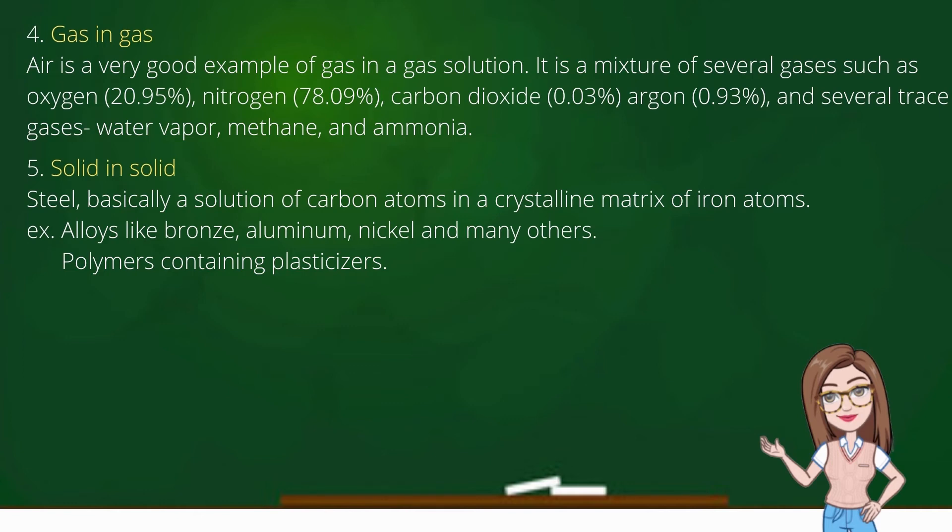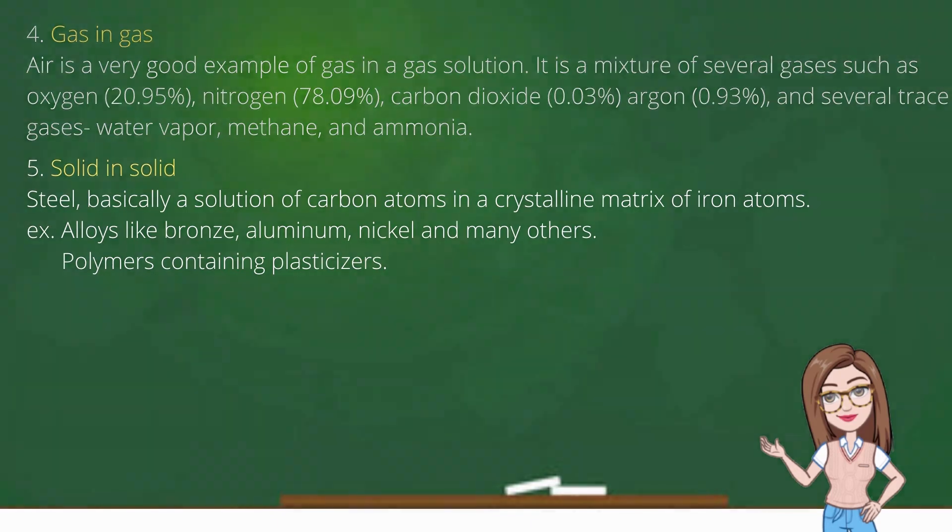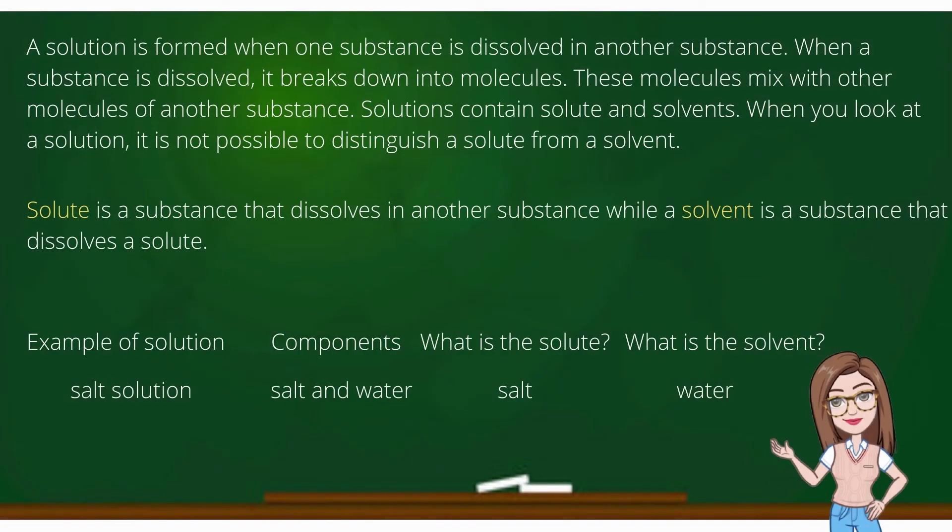And last is solid in solid. Steel is basically a solution of carbon atoms in a crystalline matrix of iron atoms, for example alloys like bronze, aluminum, nickel, and many others, also polymers containing plasticizers.